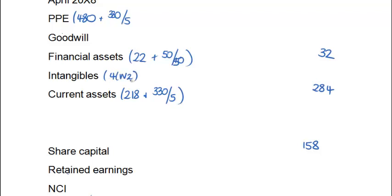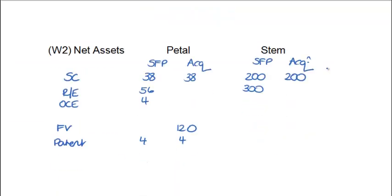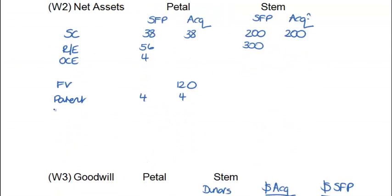Because the patent is an intangible fixed asset, I'm going to set up a separate line on the face of my statement of financial position to the value of 4 million. We're told that patent has 4 years remaining, so we're going to have to amortize it over that 4-year period — which is 1 million per year — giving us an intangible total of 3 million. That amortization also has to be deducted from the profits of PETAL, so go down to working number 2 and deduct our amortization of 1 million.